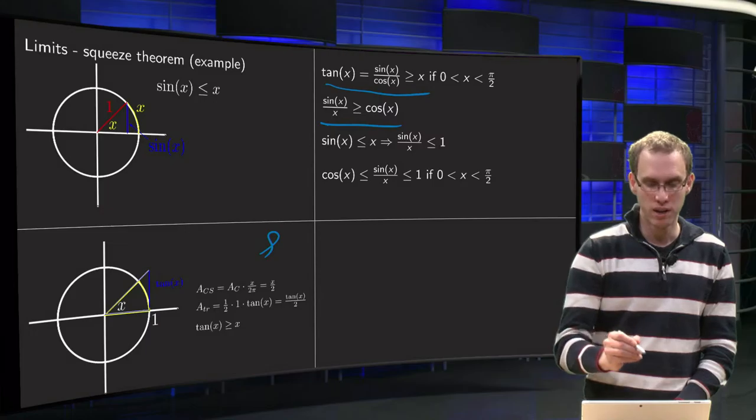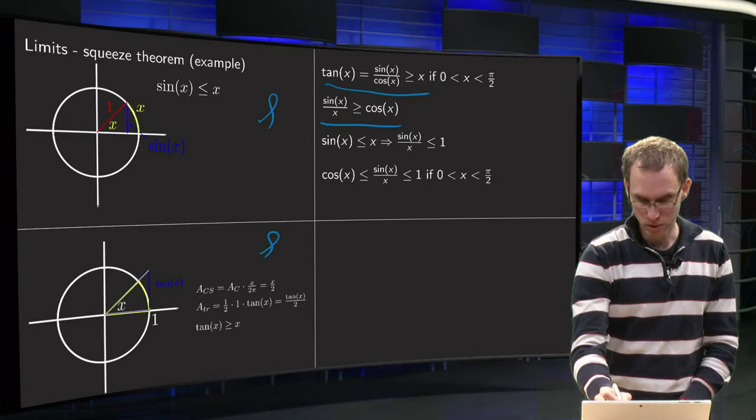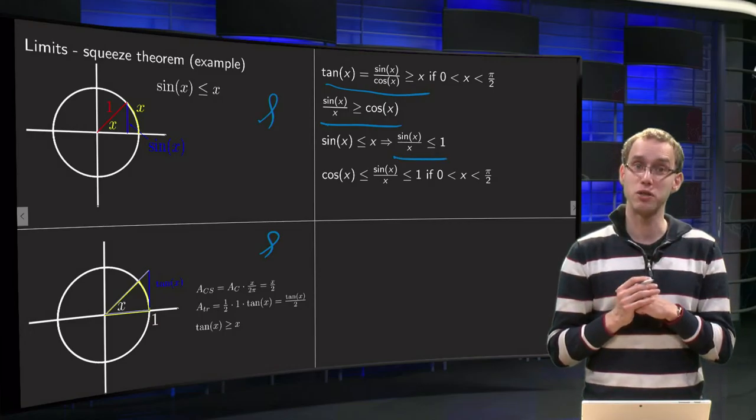Then from the first picture, over here, we have sine of x is smaller or equal than x divided by x, so you have sine of x over x is smaller or equal than 1.